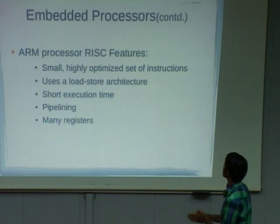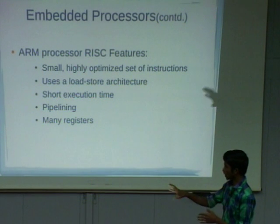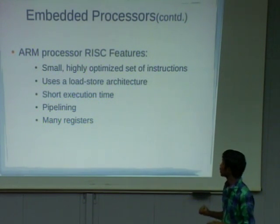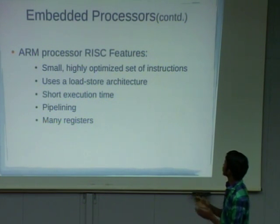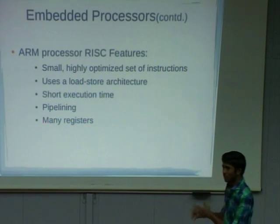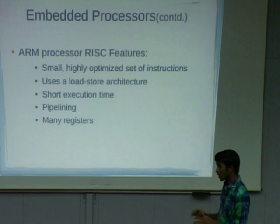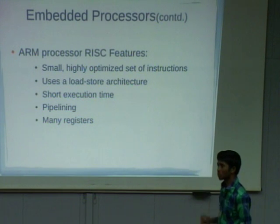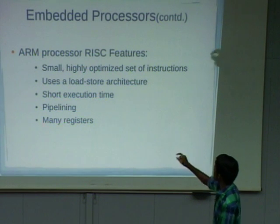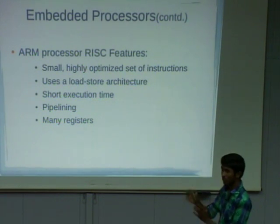Coming to RISC. As compared with CISC, in CISC there are a lot of instructions available. But in RISC, the instruction set is optimized. Due to the optimization of the number of instructions supported by the processor, we try to avoid hardware complexity. By avoiding hardware complexity, we reduce the cost of the processor. Due to RISC, we support shorter execution time as compared with CISC.